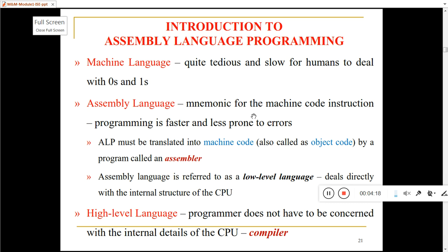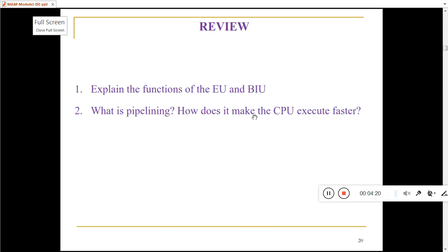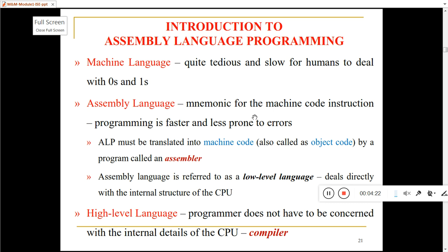So this is about 8086. The next question is: what is the difference between machine language, assembly language, and high-level language — or what is the difference between an assembler and a compiler? Computer hardware processes data and instructions in terms of 0s and 1s. This processing is called machine language.